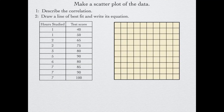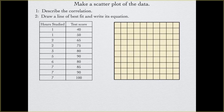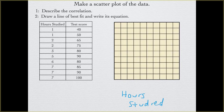Here we have a problem. It says: make a scatter plot of the data, describe the correlation, draw a line of best fit, and write its equation. The first thing we are going to do is make a scatter plot and figure out our scales. We have hours studied in the left column and test score in the right column. Hours studied is our independent variable, so label your graph accordingly — hours studied on the horizontal axis and test score on the vertical axis. We also need to indicate our scale.